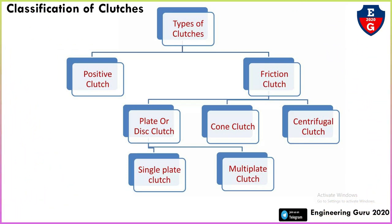This is the classification of clutches. Clutches are divided into four types: mechanical, pneumatic, hydraulic, and electromagnetic. Mechanical is divided into positive clutch and friction clutch. The friction clutch is divided into three types: plate or disc clutch, cone clutch, and centrifugal clutch.